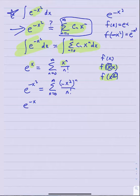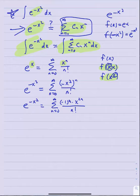In other words, the power series for e to the minus x squared is n equals zero to infinity negative one to the n times x to the 2n over n factorial. So now we have a power series for e to the minus x squared, which means I can come up with a power series for its antiderivative by simply integrating the power series on the right side.